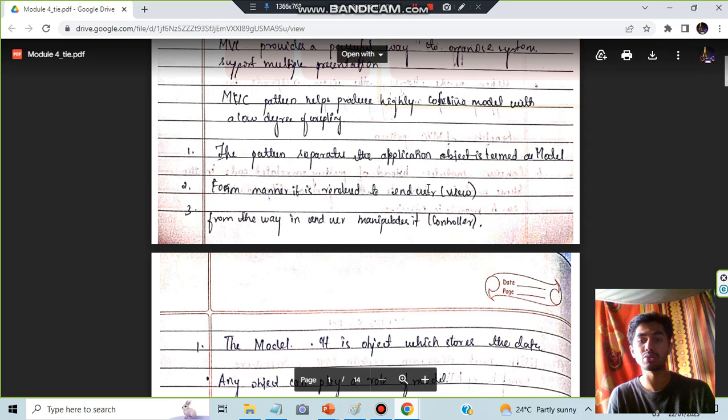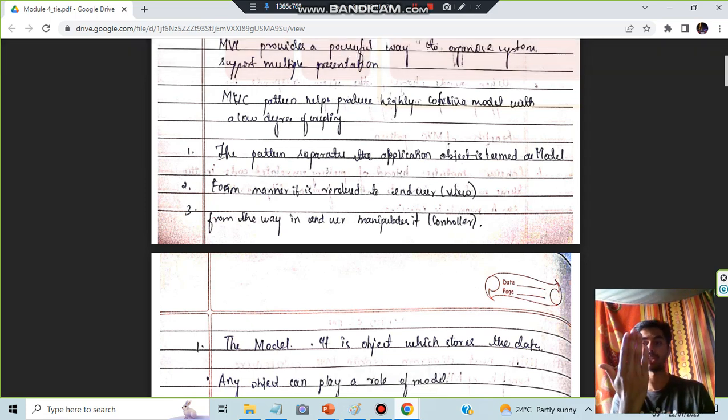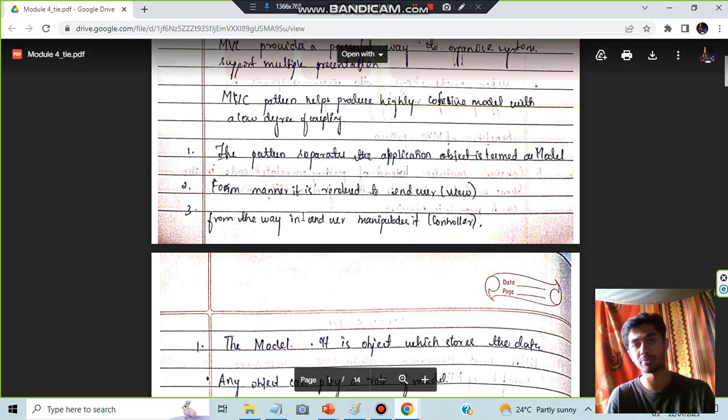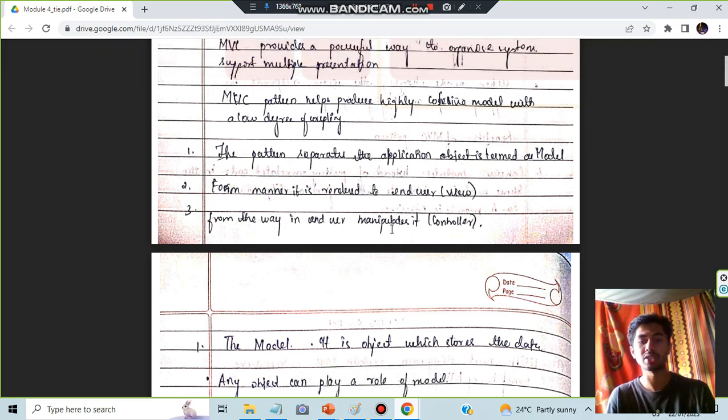From the manner it is released to the end user, it is called as a view. The view is how the user will view it. And from the way the end user manipulates it, how the user will be manipulating it, is found in the controller.